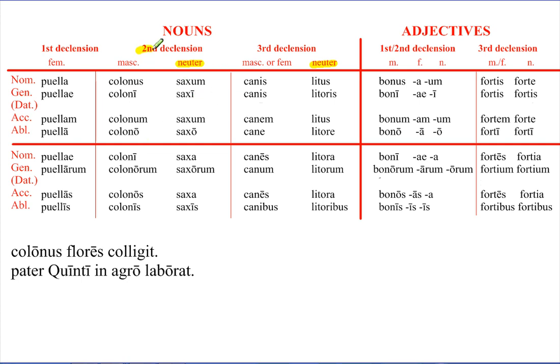So the endings for this, for saxum, since it's a second category noun, are going to be extremely similar to the masculine ones you learned already. Colonus, saxi, saxum, saxo. So it's pretty much the same endings, except for the first one is saxum. Other than that, it's the same.